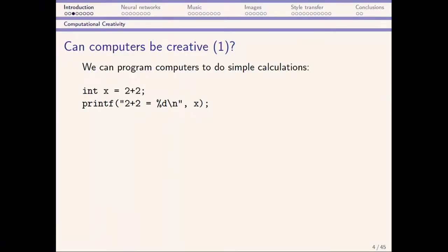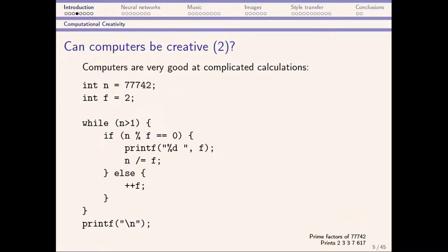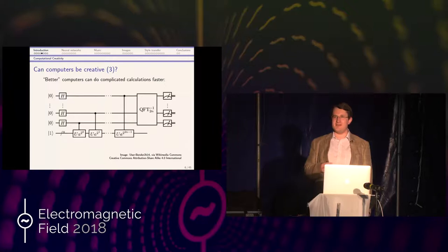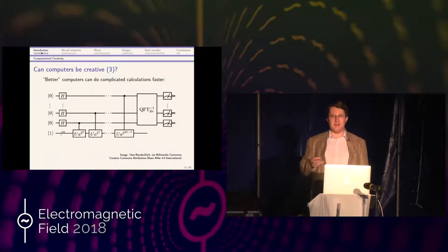So can computers be creative? We can tell computers what to do — we can tell them to add two numbers, write simple programs. Computers can also do much more complicated calculations; for instance, a simple C program to calculate the prime factors of a number N. We can even build a quantum computer to factorize numbers very quickly using something like Shor's algorithm. But it's still not creative. The human who invented this algorithm was very creative, but the computer is just following a very algorithmic process.